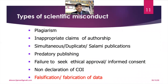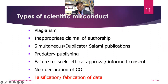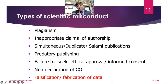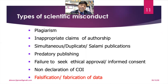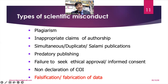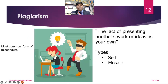There are various types of scientific misconduct: plagiarism, inappropriate claims of authorship, simultaneous or duplicate publications, predatory publishing, failure to seek ethical approval or informed consent, non-declaration of conflict of interest, and falsification or fabrication of data. Among these, falsification or fabrication of data is the gravest form of scientific misconduct, wherein authors either manipulate skewed data to look favorable or generate data where no data exists.